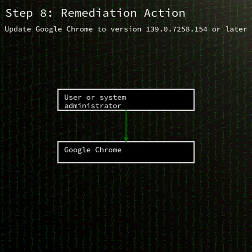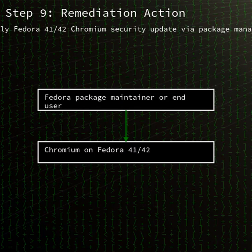To stay safe, update Google Chrome immediately to version 139.0.7258.154 or later. Fedora users should apply the critical Chromium updates released for versions 41 and 42. As always, keep your browsers up to date, avoid visiting untrusted sites, and follow security advisories from your vendors. Thanks for listening to Security Brief — tune in next time for the latest in cybersecurity news.